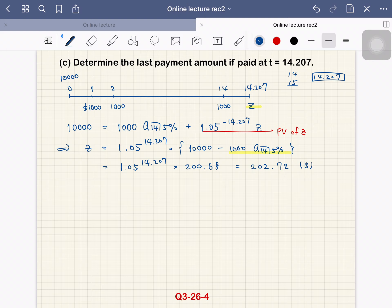Remember that if we paid this amount at t = 15, that was $210. So this amount is slightly less than that.